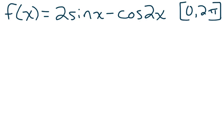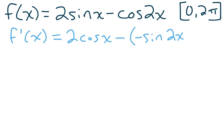And we know that whenever we want to find extrema on an interval, we first need to take the derivative. So we say f prime of x is 2 cosine x, because the derivative of sine is cosine, minus the derivative of cosine is negative sine of 2x. But then don't forget, since I have 2x inside the sine, I need to multiply by the derivative of 2x, which is 2.